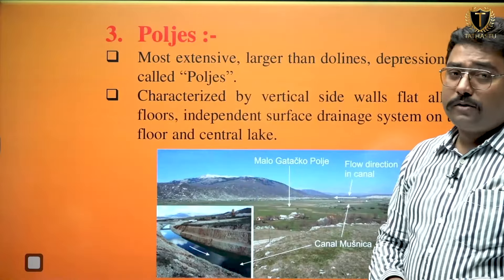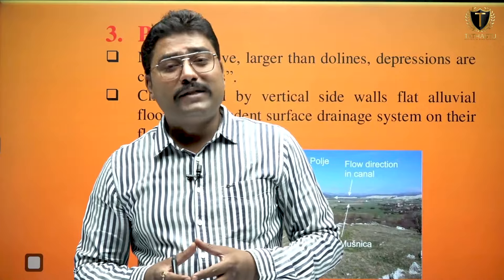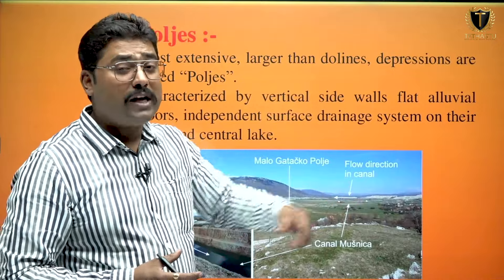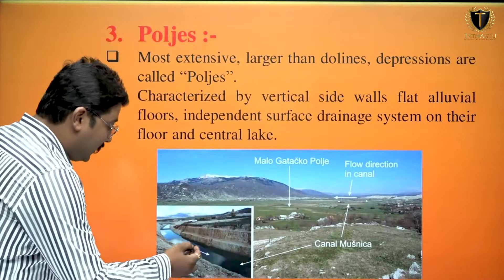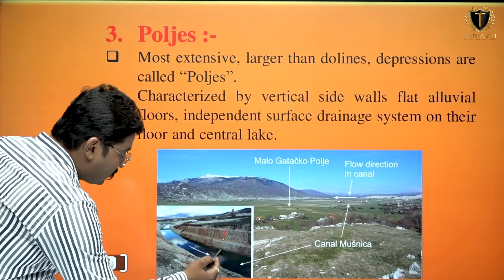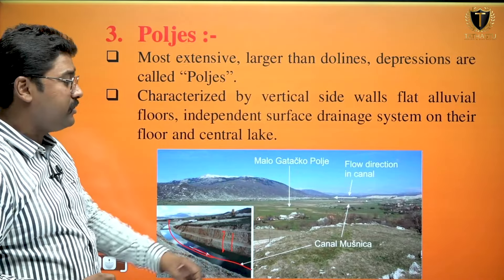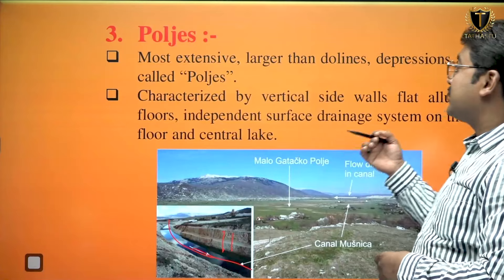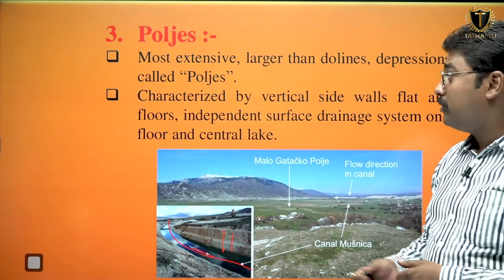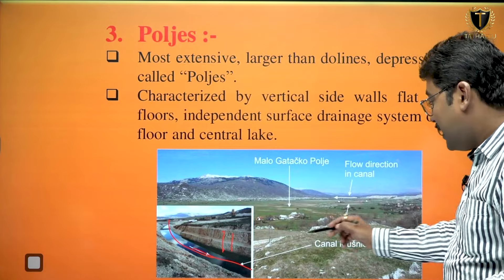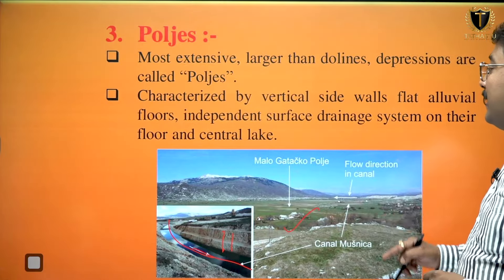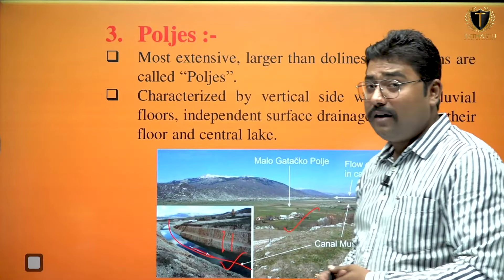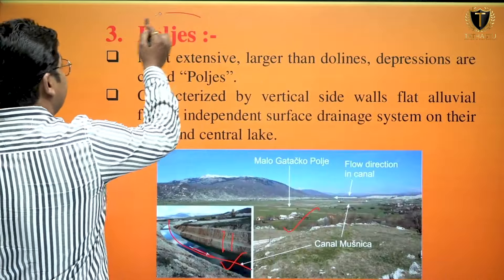After the karst window will be the poljes. Poljes have a separate drainage system in which many sinkholes are present, one canal will be present, and that canal will have vertical walls. The most extensive, larger-than-doline depressions are called poljes, characterized by vertical side walls, flat alluvial floors, and an independent surface drainage system, with a central lake present on their floors.